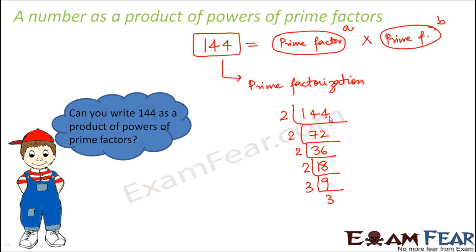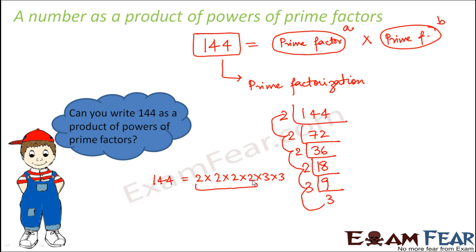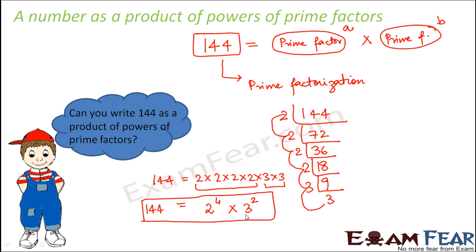So if we want to write 144 as a product of prime factors, we get: 144 = 2 × 2 × 2 × 2 × 3 × 3. Now, 2 is being multiplied 4 times, so we write it as 2 to the power 4. Similarly, 3 is repeated 2 times, so that is 3 to the power 2. So 144 can be written as 2⁴ × 3². Here 2 and 3 are the prime factors, 4 and 2 are their respective powers, and 144 is the product — this is what we mean by representing a number as a product of powers of prime factors.